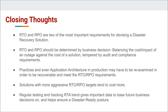To summarize what we've learned today: your RTO and RPO are your two most important requirements for devising a recovery solution — everything about that solution goes back to what RTO and RPO you have to meet. They should be determined by a business decision balancing the cost of an outage against the cost of a solution, including auditing and compliance requirements. Your practices, application architecture, and production environment may have to be re-examined to meet your RTO and RPO requirements, especially the RPO. Solutions with more aggressive RTO and RPO targets will tend to be more expensive. Finally, you need to test your DR regularly and track the recovery time actual trend, because that gives you important information for future business decisions and helps you maintain a disaster-ready posture at all times.